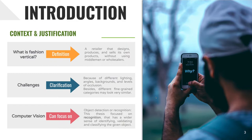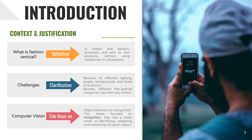One might be wondering: what is the Fashion Vertical? Fashion Vertical means a retailer that designs, produces, and sells its own products without using middlemen, without an intermediary layer. And why is it even challenging? For the same product, a picture can be taken in different lighting, angles, backgrounds, and levels of occlusion. Meanwhile, different fine-grained categories may look very similar — for example, royal blue versus turquoise in color. In Computer Vision, we have two tasks that are often misunderstood: Object Detection versus Object Recognition. Detection is the existence or not of an object in a scene, while recognition relates to a wider sense of identifying, validating, and classifying the given object.